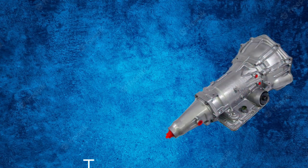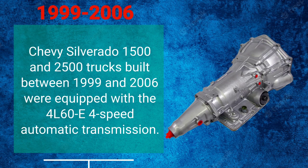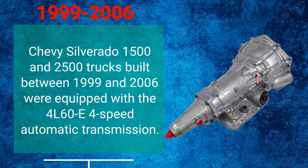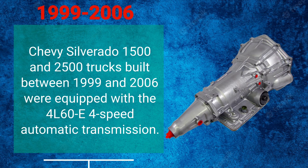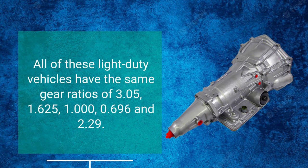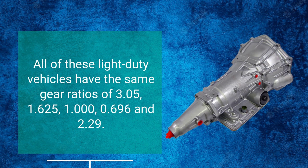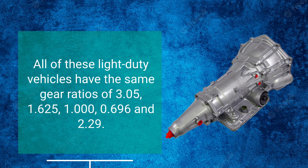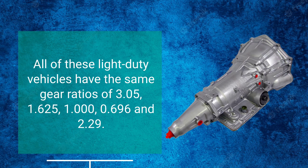Chevy Silverado 1500 and 2500 trucks built between 1999 and 2006 were equipped with the 4L60E 4-Speed Automatic Transmission. So all of these light-duty vehicles have the same gear ratios of 3.05, 1.625, 1.0000, 0.696, and 2.29.